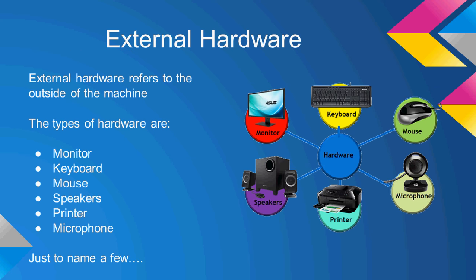External hardware refers to the outside of the machine. The types of external hardware include the monitor, keyboard, mouse, speakers, printer, or a microphone — just to name a few.